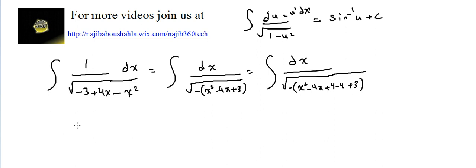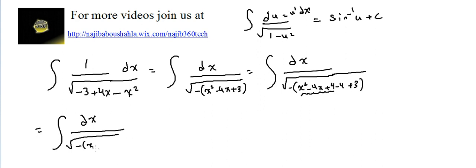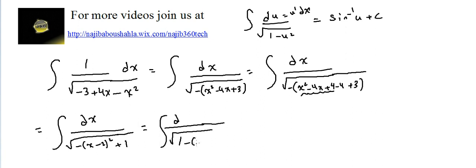So we have integral of dx over radical of minus[(x² - 4x + 4) - 4 + 3]. The identity x² - 4x + 4 equals (x-2)². Then -4 + 3 = -1, multiplied by the minus outside gives +1. This rewrites as integral of dx over radical[1 - (x-2)²].